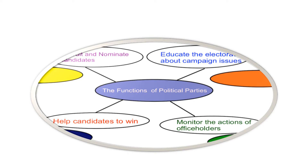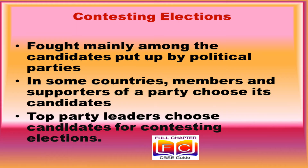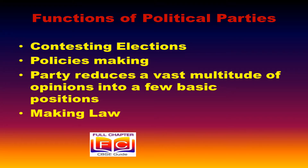All parties agree on some policies and programs for the society with a view to promote the collective good. Parties reflect fundamental political divisions in a society. A party is known by which part it stands for, which policies it supports, and whose interest it upholds. A political party has three components: the leaders, the active members, and the followers.